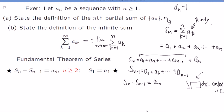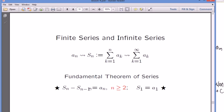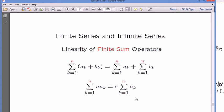I decided to approach this nth partial sum business the completely opposite way — very different from usual introduction, but I think it's the best way. While we're doing this, we'll use the linearity of the summation operator, which behaves a lot like the integral symbol. Think about this as a finite sum: A1 + B1 + A2 + B2 — you can reorganize all the A's and B's, no problem. If everything is multiplied by the same number, you can factor it outside.